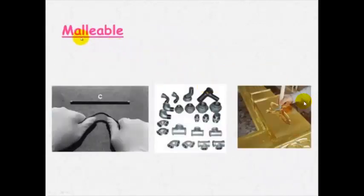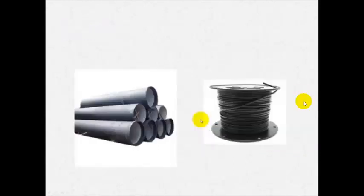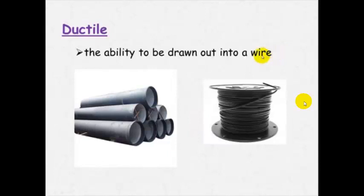They are also malleable which means that they can be forcibly bent or hammered into shape. You can see here someone is bending it. Sometimes it requires a little bit more hard work but they can be reshaped using force. And they are ductile. And by ductile we are talking about the ability to be drawn out into a wire.